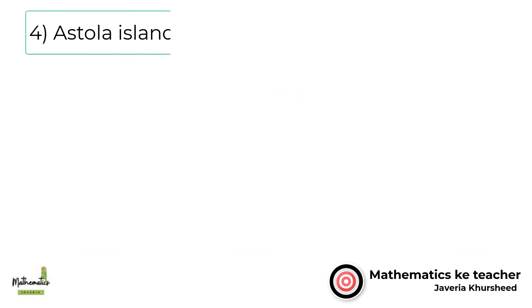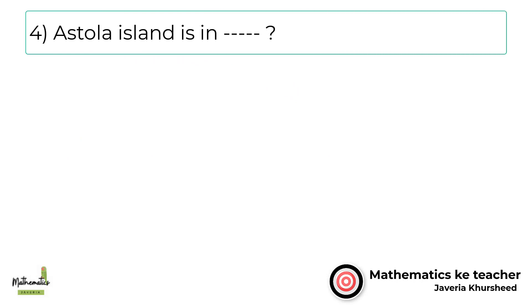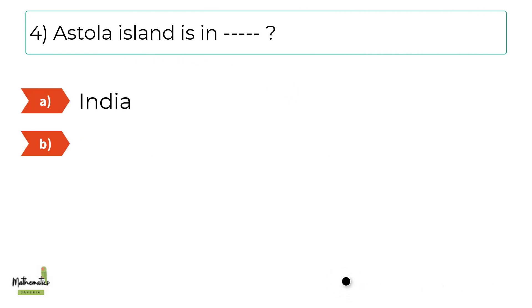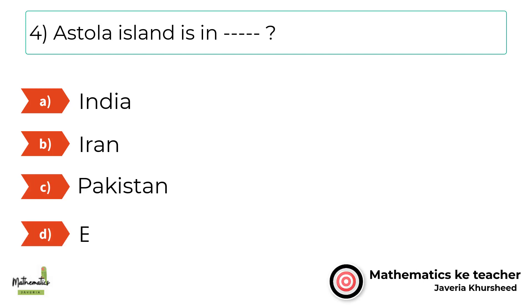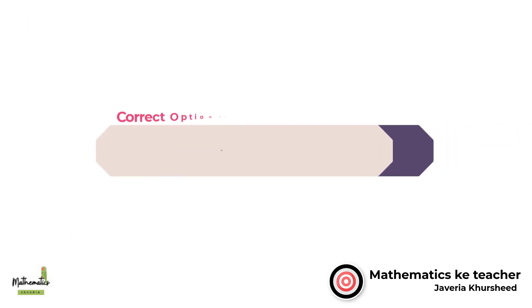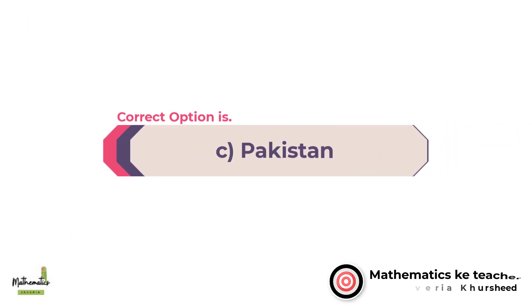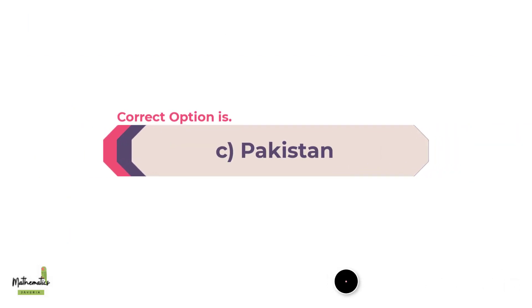Number 4. Astila Island is in dash. A. India. B. Iran. C. Pakistan. D. Bangladesh. Correct option is C. Pakistan.